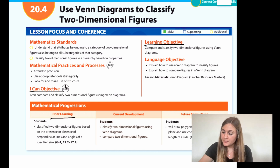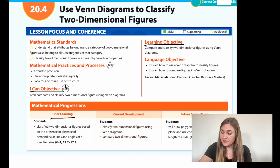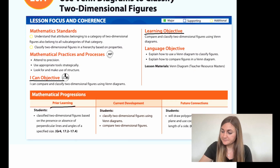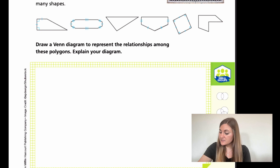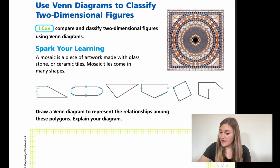The prior learning is that students classify two-dimensional figures based on the presence or absence of perpendicular lines and angles of a specified size. Alright, so moving into the lesson on page 509.